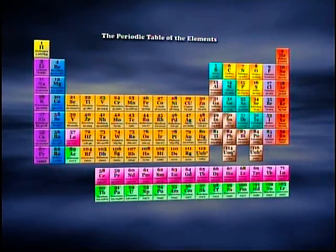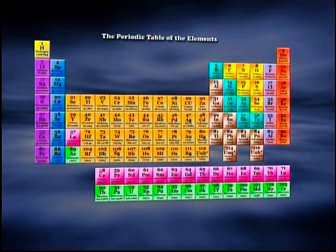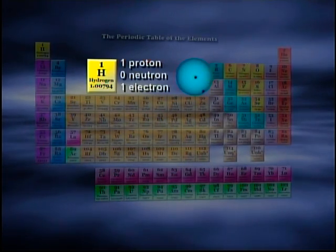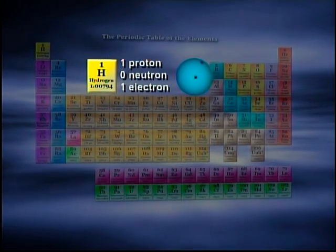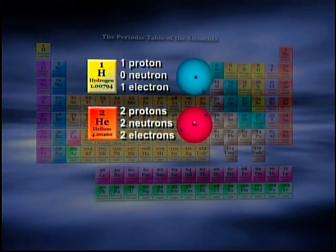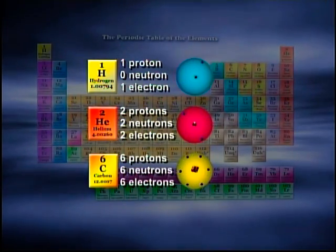The nucleus always contains one or more protons and may or may not contain neutrons. For example, hydrogen has only one proton in the nucleus. Helium has two protons and two neutrons, and carbon has six protons and six neutrons.